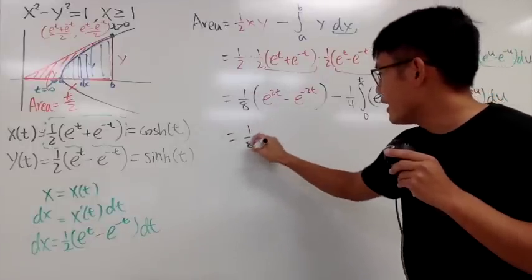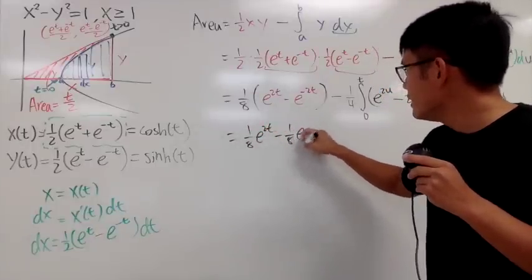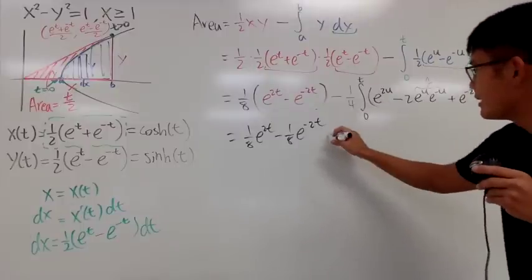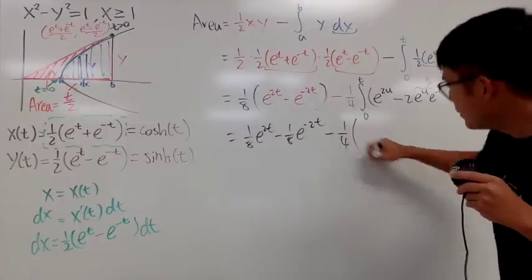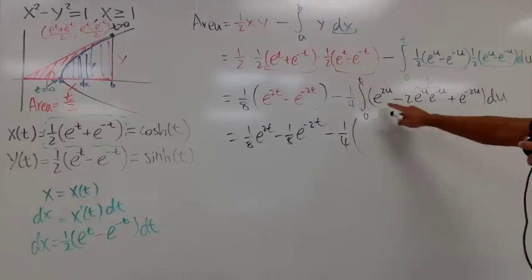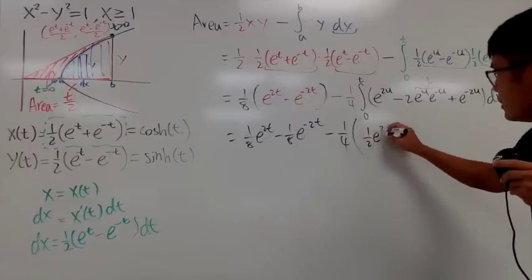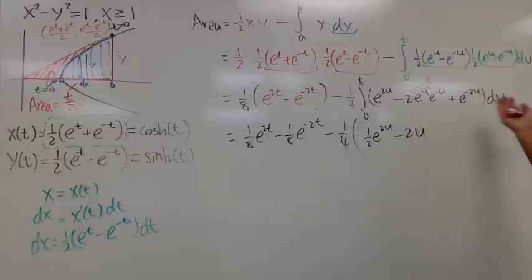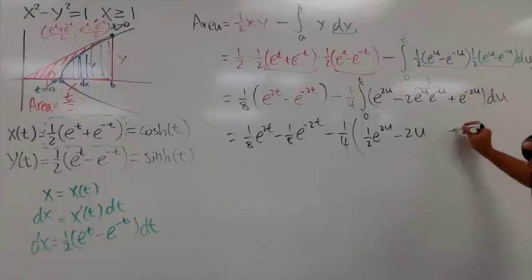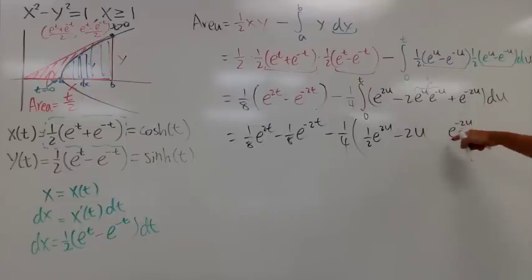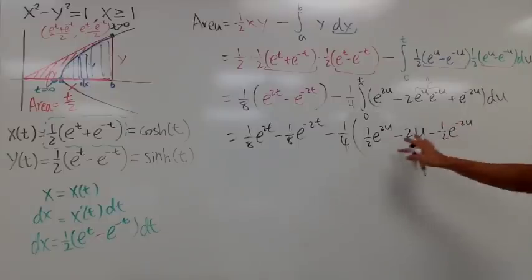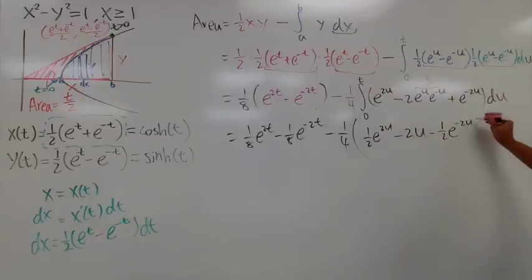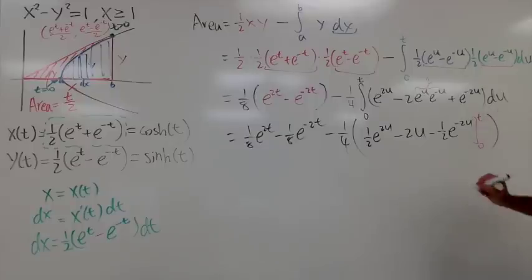Anyway, distribute the 1 over 8. So, you have 1 over 8, e to the 2t, minus 1 over 8, e to the negative 2t. And then, let's write this down, minus 1 over 4. And let's put down a big parentheses for the result of the integration. Integrating e to the 2u, we get 1 half e to the 2u. This is pretty much integrating negative 2. So, we get minus 2u. And then, we will have to integrate this, which is e to the negative 2u. But then, you divide it by the negative 2. So, it's like the minus right here. So, this is the integration step. And now, you have to plug in this. So, put this down, 0 to t, like that.